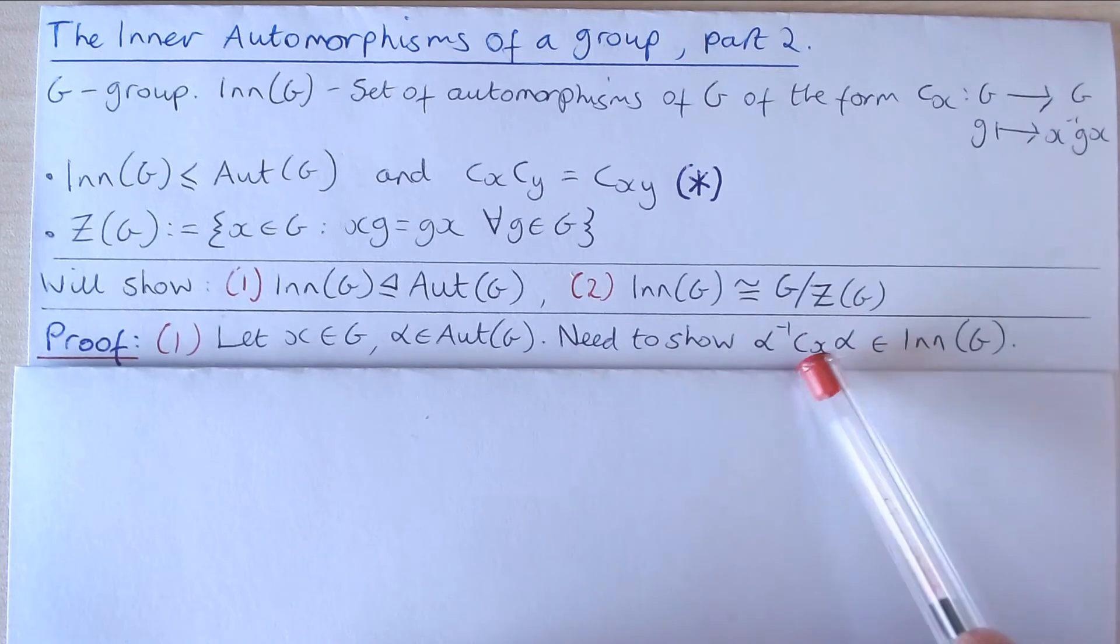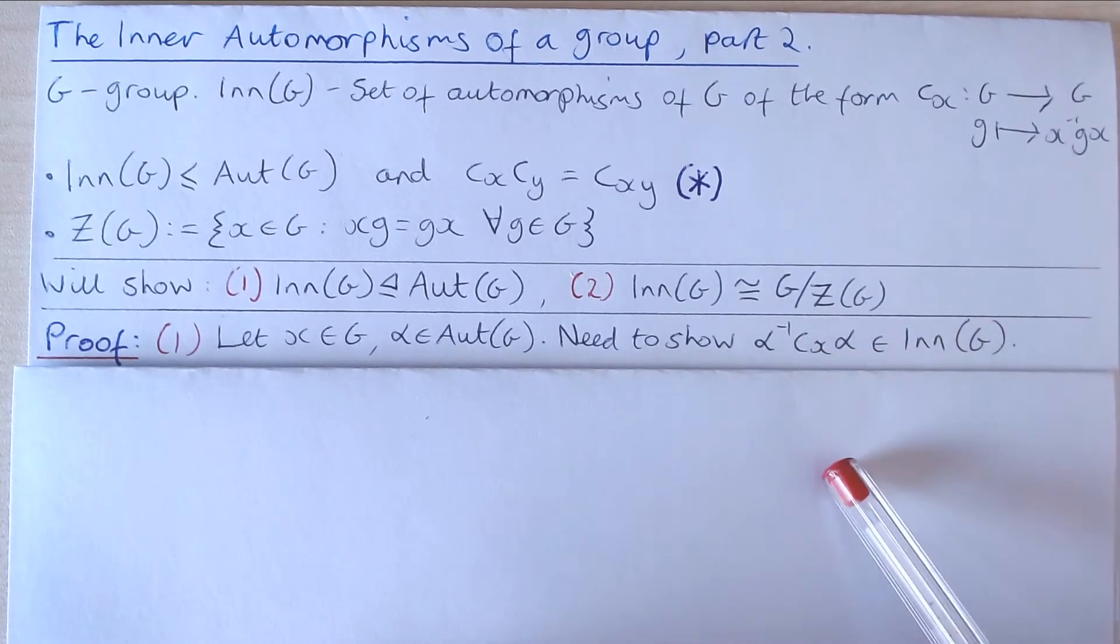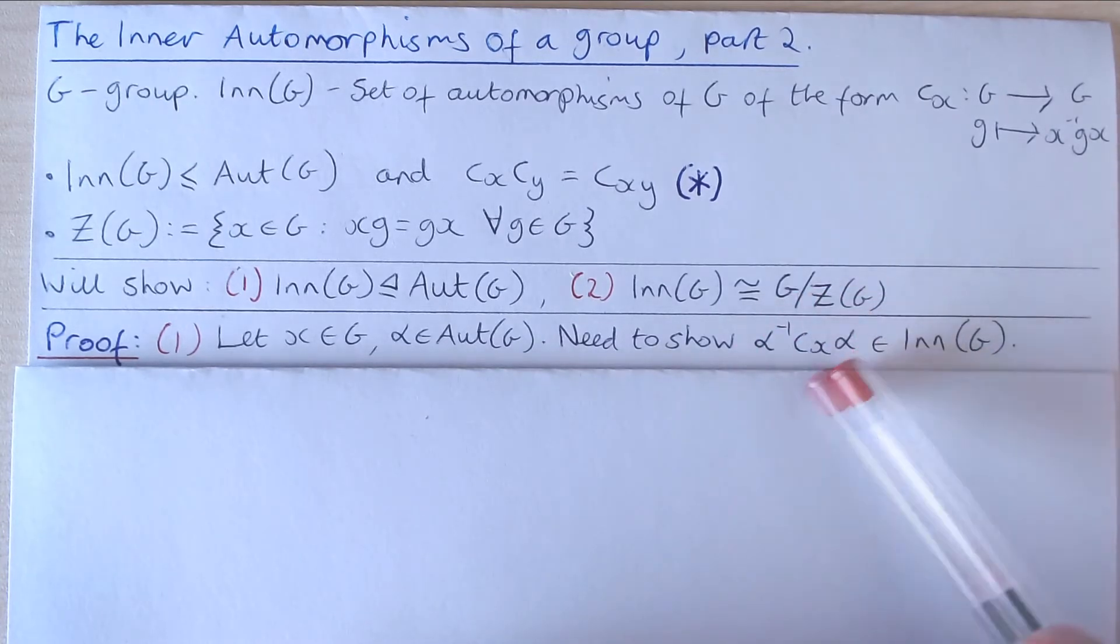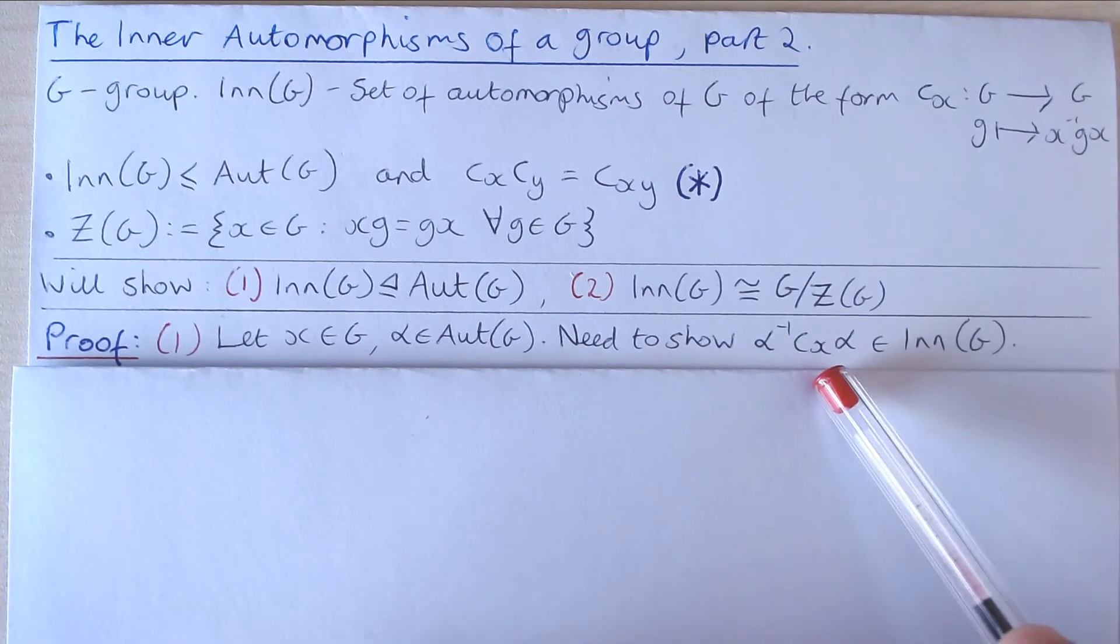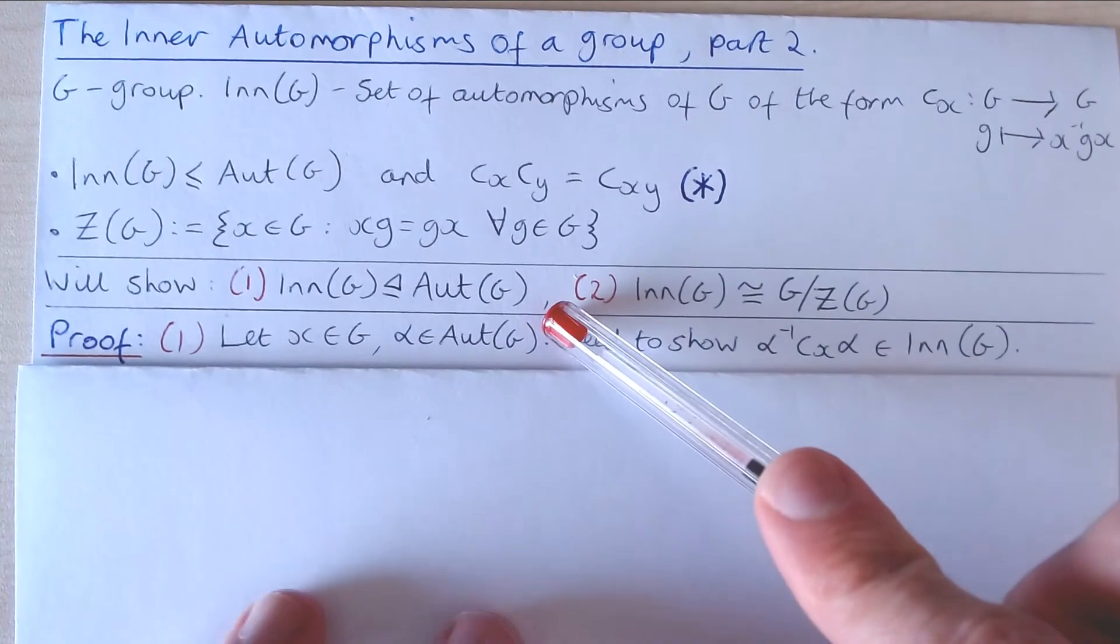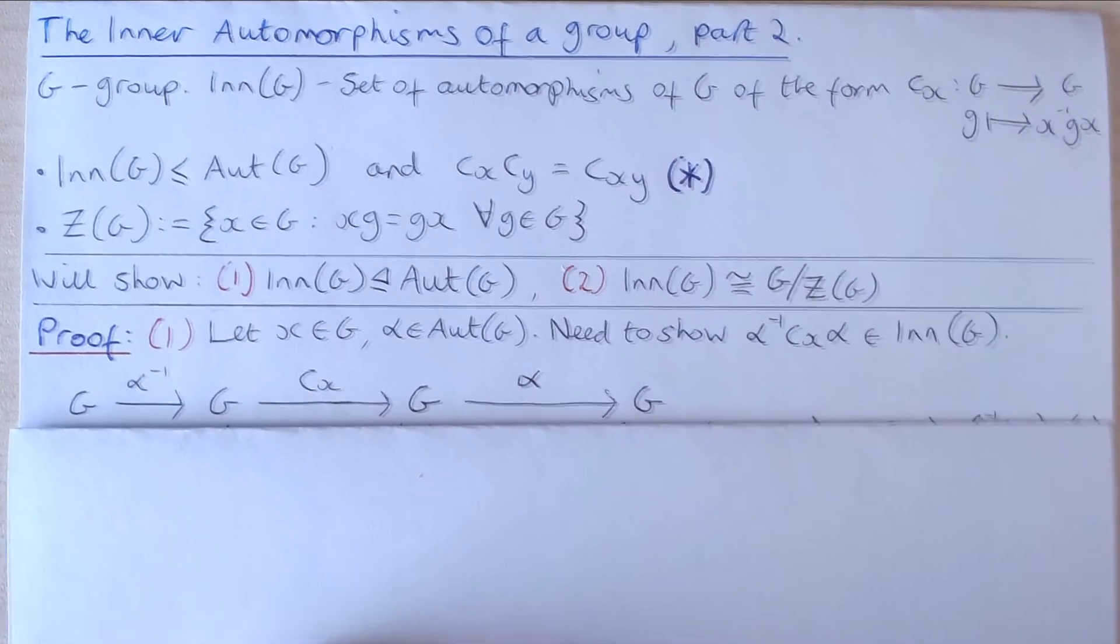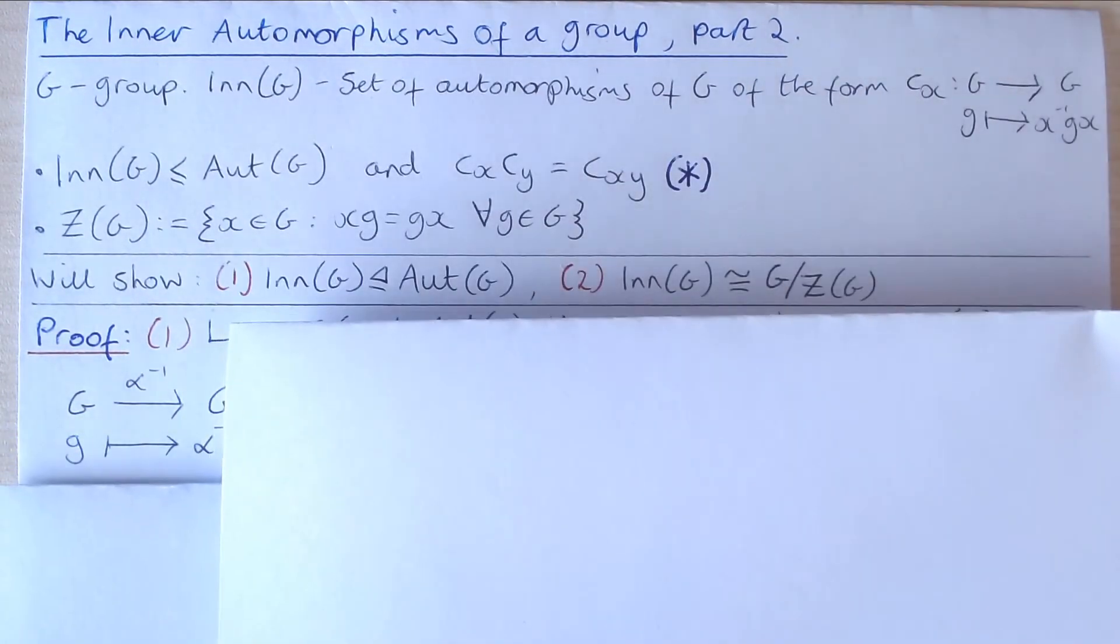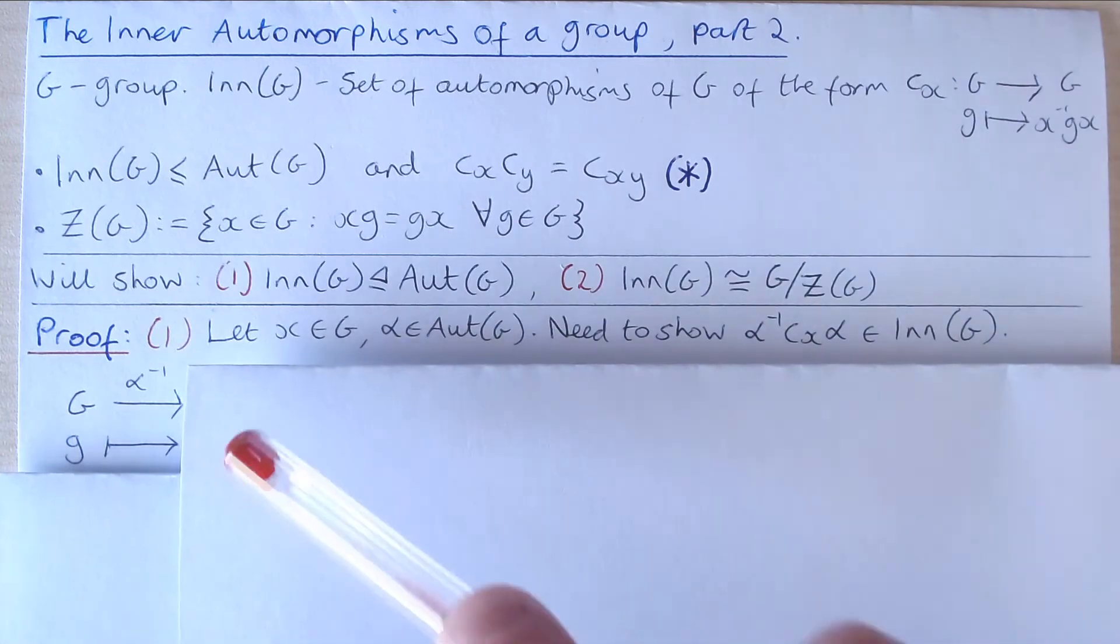As α⁻¹, C_x, and α are all automorphisms of G, and as we know that the automorphisms of G form a group, we know that at least this composition is an automorphism of G. To show that it is an inner automorphism of G, let's see where it sends the element g of our group G.